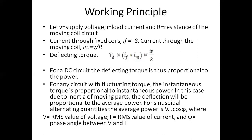The current through the moving coil IM equals V divided by R. So the deflecting torque TD is proportional to IF multiplied by IM, which gives IV divided by R. This is the deflecting torque, which is proportional to IF and IM. For a DC circuit, the deflecting torque is thus proportional to the power.